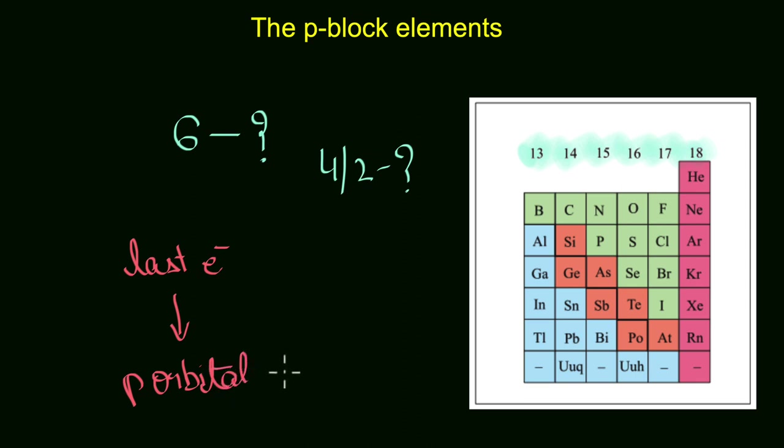How many p orbitals are there? There are three p orbitals, and every orbital can accommodate a maximum of only two electrons, which means p orbitals in total can accommodate a maximum of only six electrons. This is why we have six groups of elements.